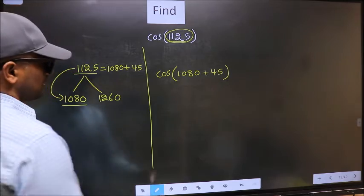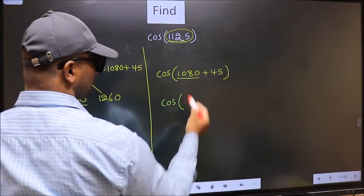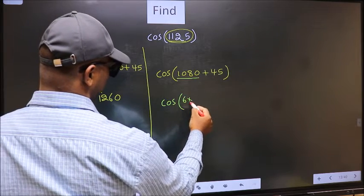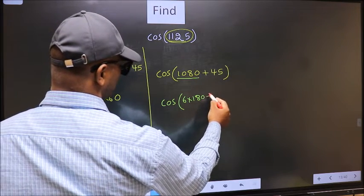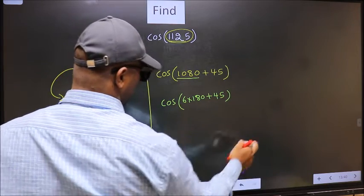Next, cos. In place of this, we should write 6×180 plus 45.